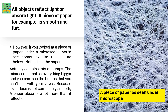All objects reflect light or absorb light. A piece of paper, for example, is smooth and flat. However, if you looked at a piece of paper under a microscope, you would see something like the picture shown — the paper actually contains lots of bumps. The microscope makes everything look bigger and you can see bumps that are not seen with your naked eyes. Because its surface is not completely smooth, paper absorbs a lot more light than it reflects.